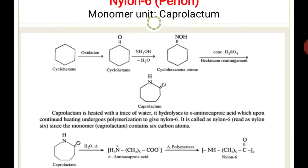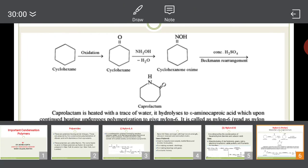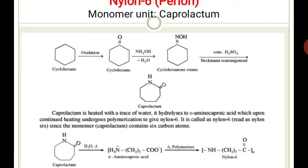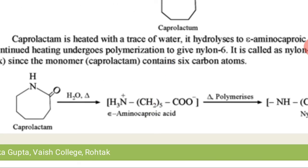Caprolactam is the monomer unit for nylon 6. When you heat caprolactam with traces of water, it first hydrolyzes to give epsilon-amino caproic acid. The NH₂ group is at the epsilon position relative to the carboxylic acid — alpha, beta, gamma, delta, and then epsilon — with five -(CH₂)₅- carbon atoms in between.